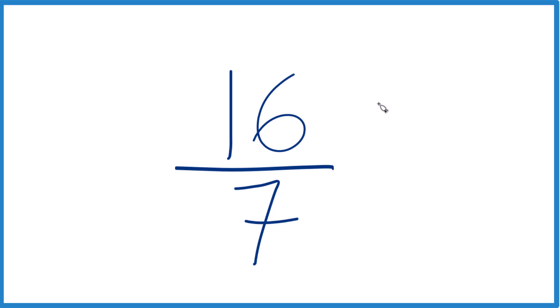The thing is, the only whole number that goes into 16 and 7 is 1. And if you divide 16 by 1, you get 16. Divide 7 by 1, you get 7, right back where you started. That means this is already simplified, so we don't have to do anything there.